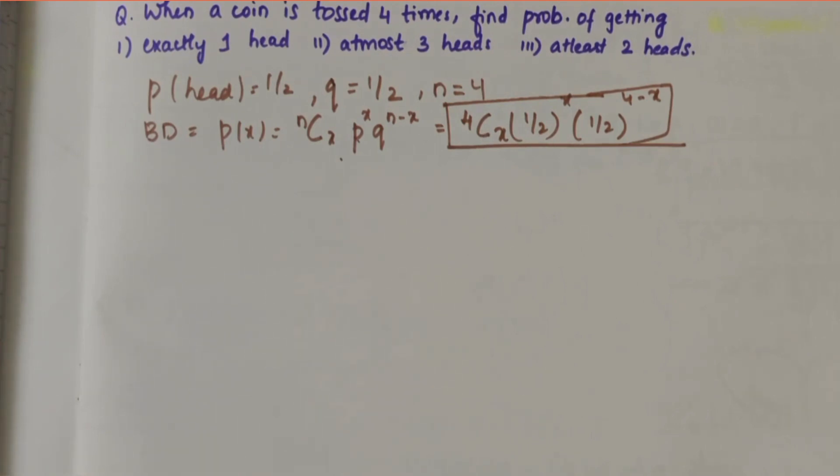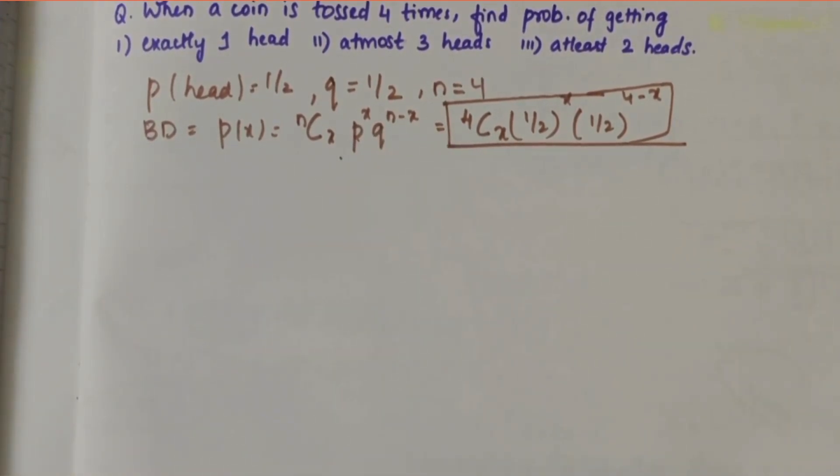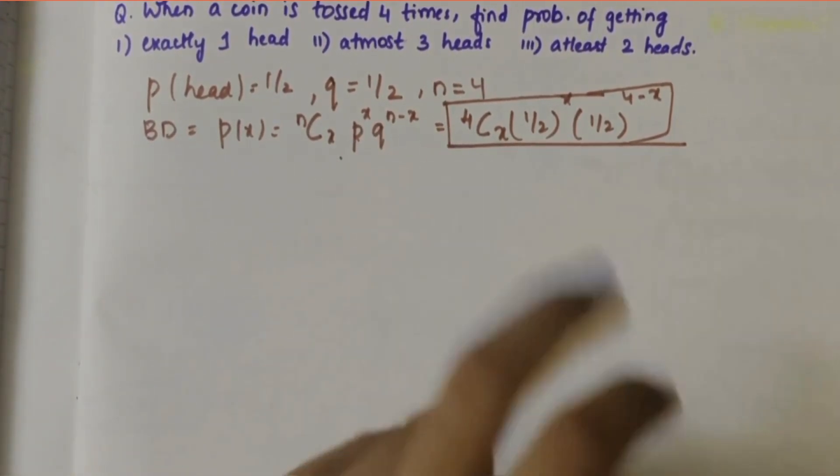First, the probability of getting a head is 1/2, and the probability of getting a tail is also 1/2. Since the coin is tossed four times, n equals 4.